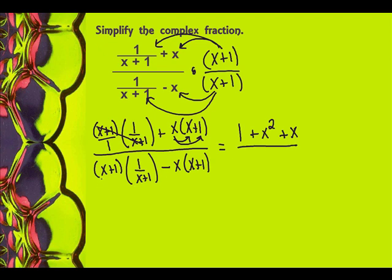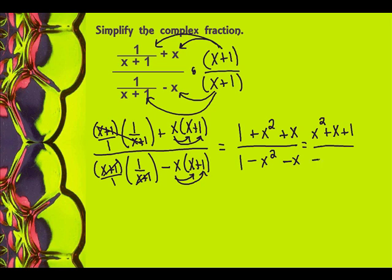Now on the bottom, the same thing is going to happen. I'm going to have a 1 — they're going to cancel and leave me with a 1. And I'm going to distribute my negative x through to leave me with minus x squared minus x. So now I'm going to rewrite this as x squared plus x plus 1 over negative x squared minus x plus 1.